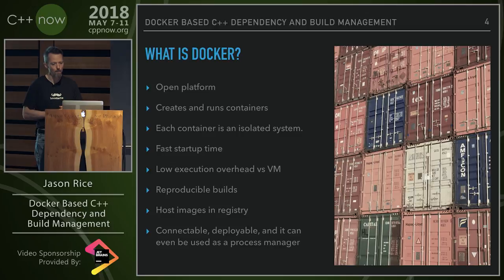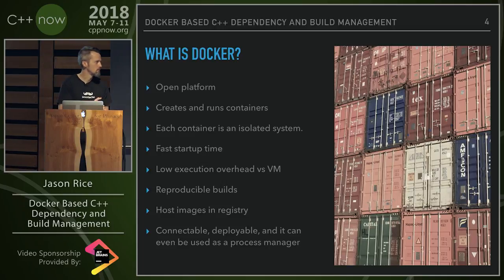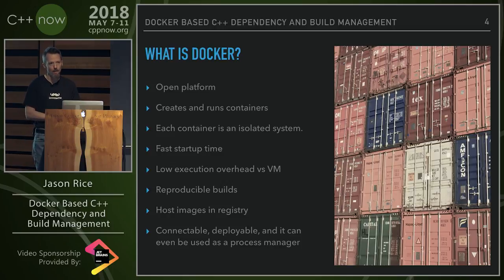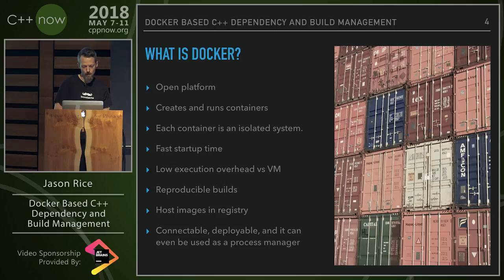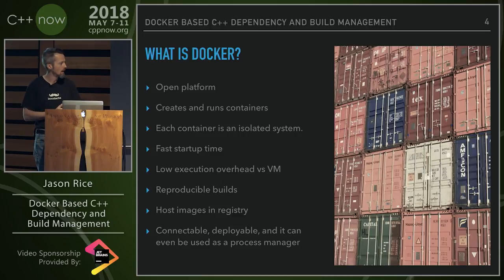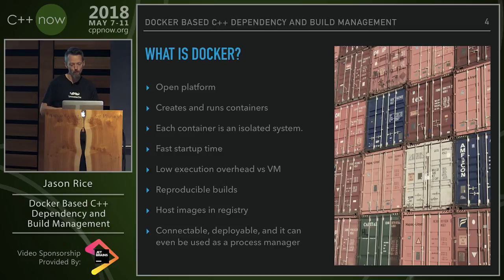Because of its DSL, Docker's goal was to make reproducible builds — so it should be, in theory, deterministic and pure. When you build something on two different computers, you should get the same result, although it takes a bit of discipline to ensure that, because you're dealing with network downloading. For example, if you download a GitHub repo from the master branch, there could be changes that break your build. Docker also has a registry that you can host images on, either locally or remotely, and it's connectable, deployable, and can even be used as a process manager.